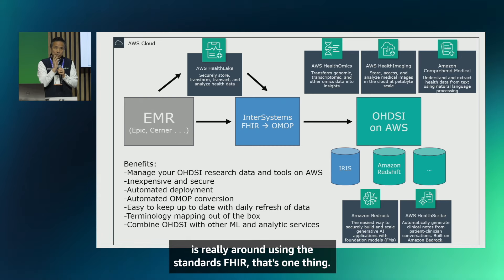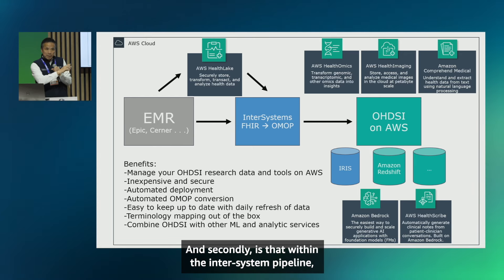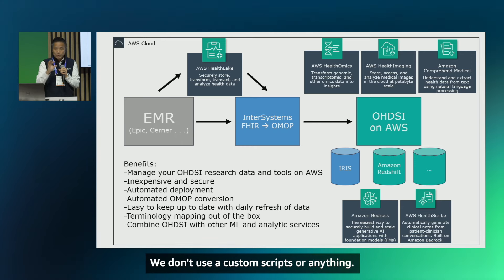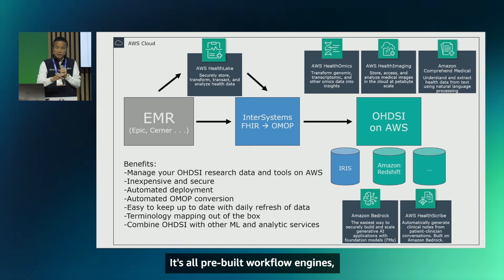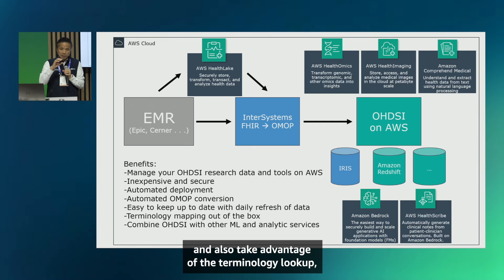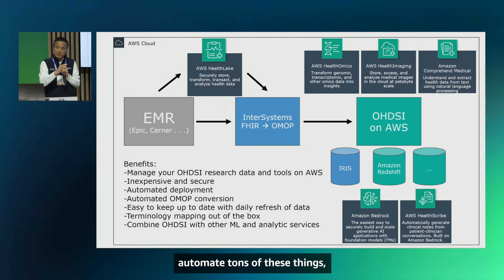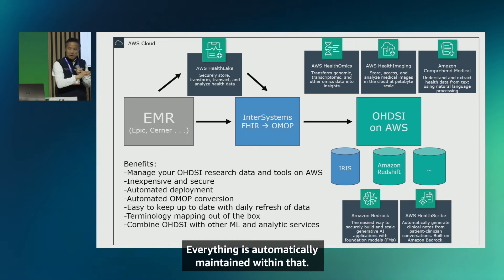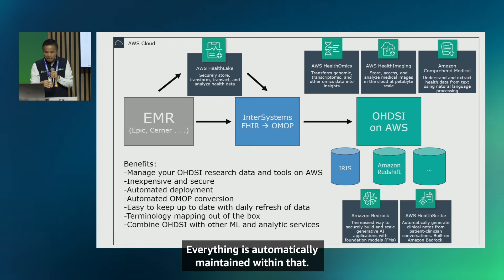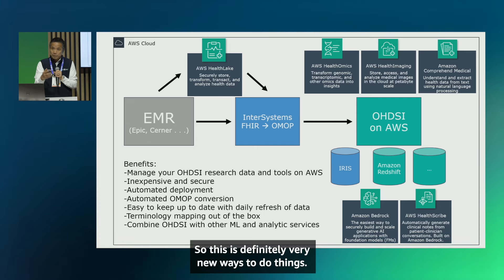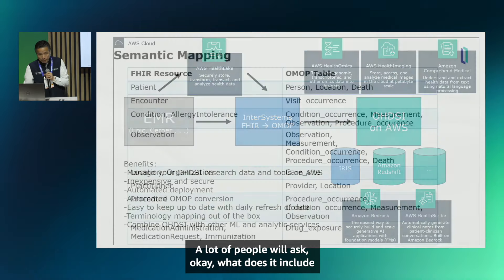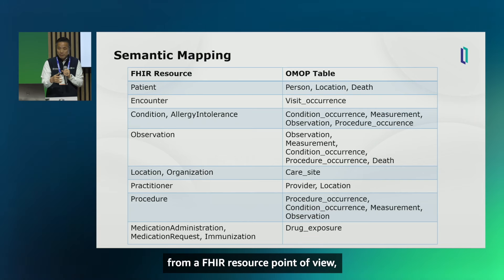The reason we're able to do this is our use of FHIR standards combined with a workflow engine inside the InterSystems pipeline. We don't use custom scripts — it's all pre-built workflow engines that automate terminology lookups and transformations. As a researcher, you don't have to worry about coding anything; everything is automatically maintained and out of the box.